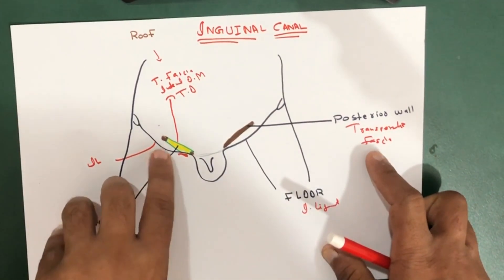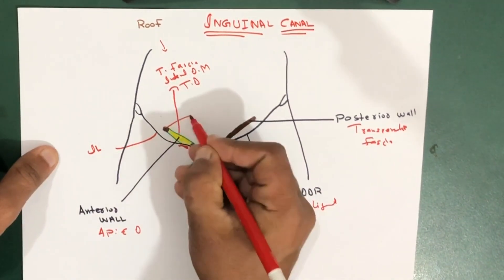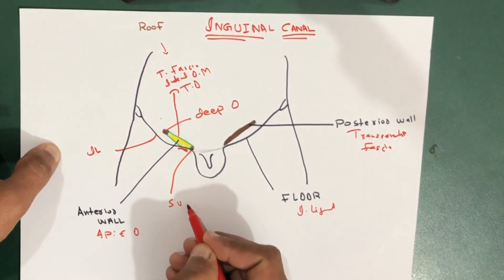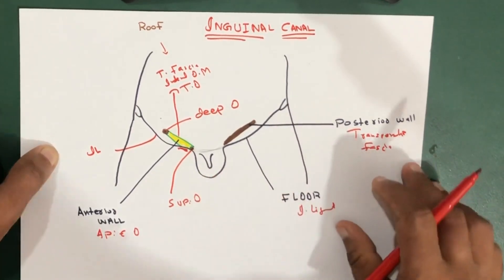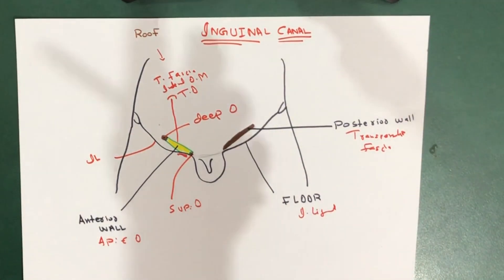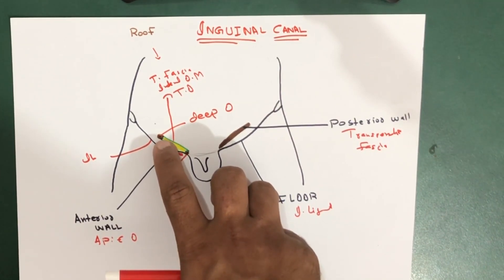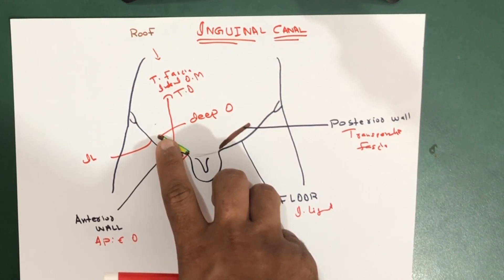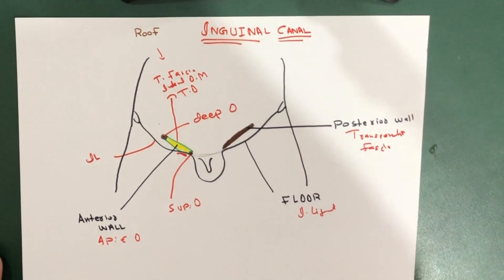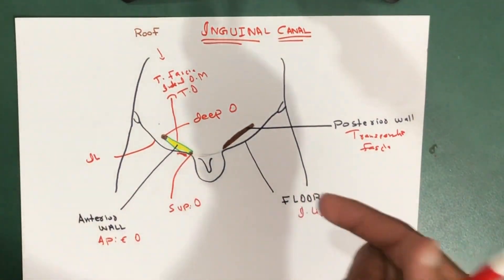There are two main openings: one is the deep or internal opening, and the other is the superficial or external opening. The deep opening is found above the midpoint of the inguinal ligament and is formed by the transversalis fascia.